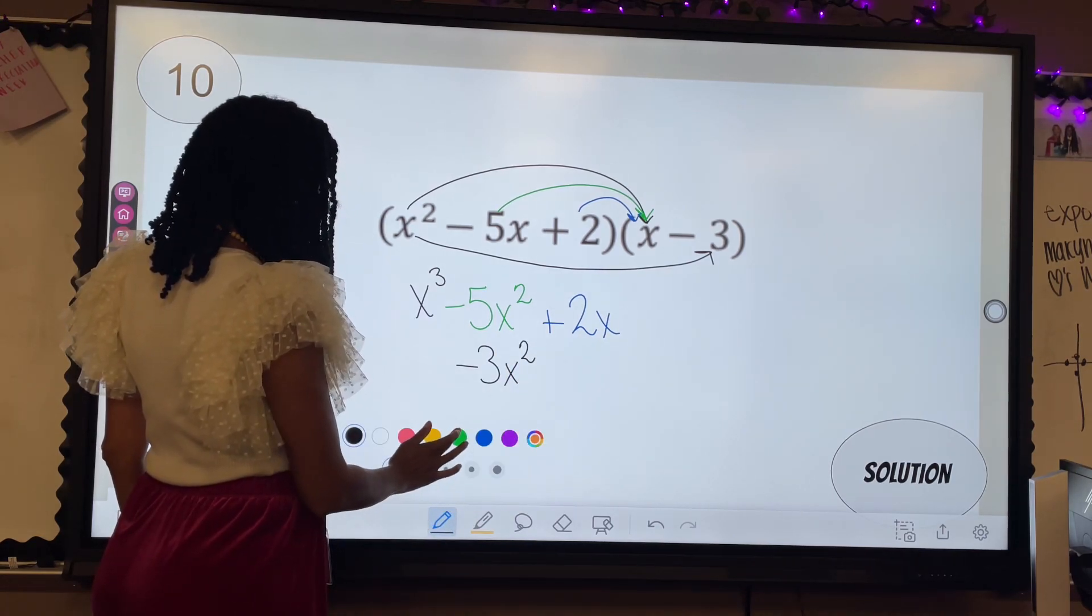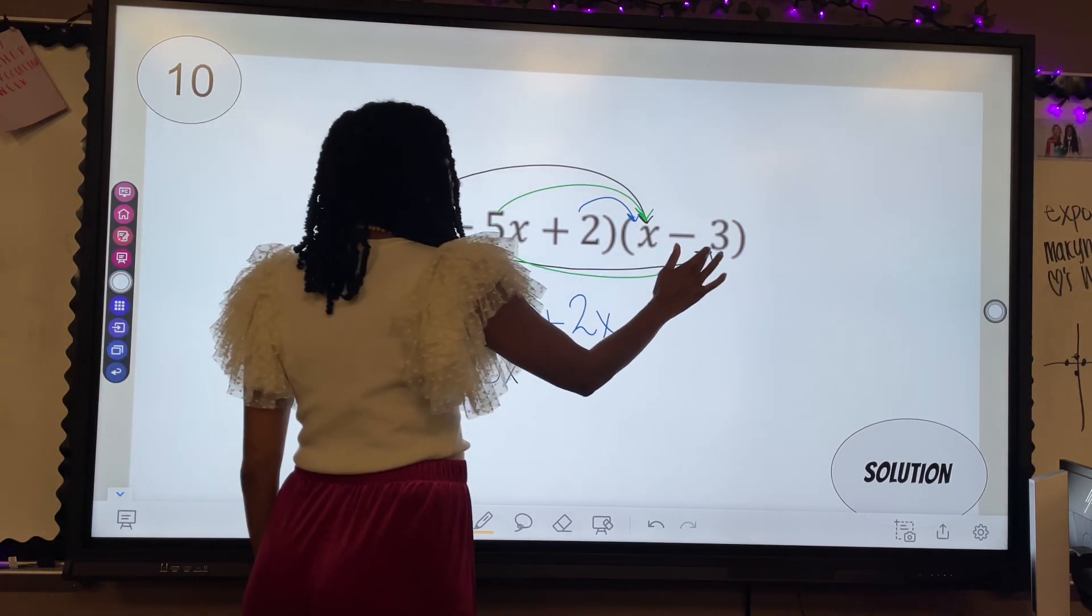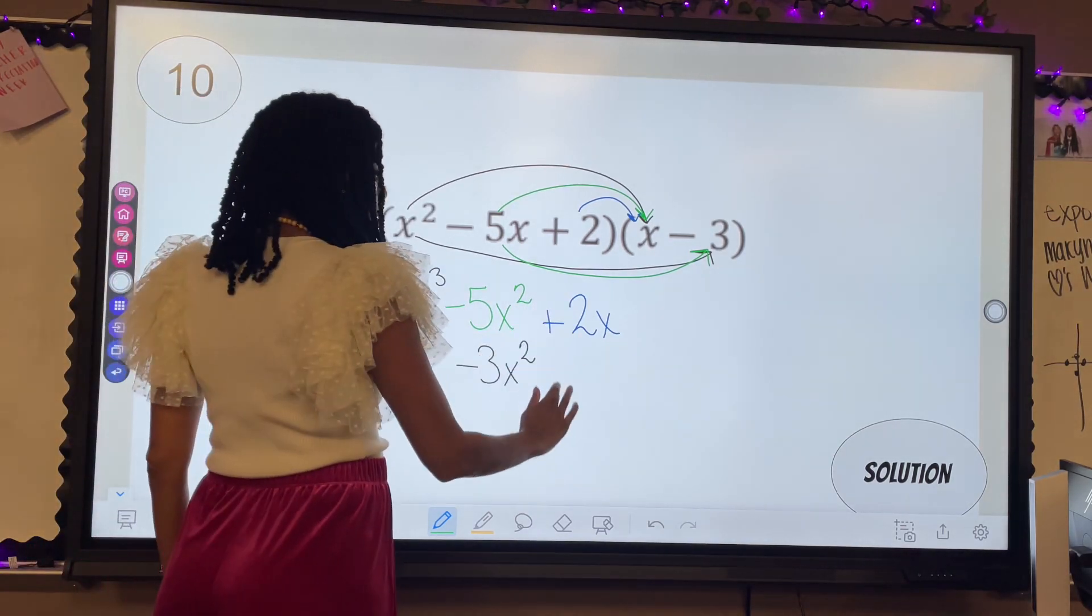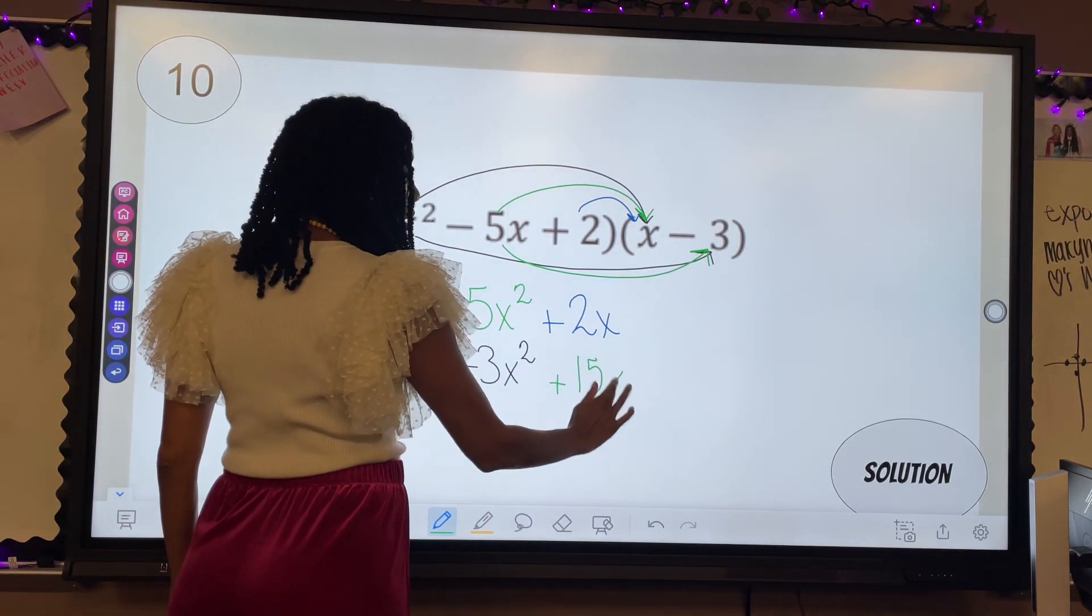Then I'm going to do negative five x times negative three, which is positive 15x, which I'm going to line up right here because they are like terms.